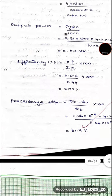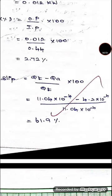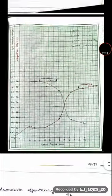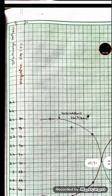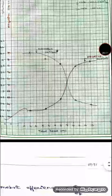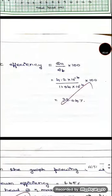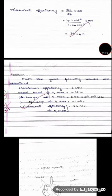The percentage slip is calculated using the formula: (Q_theoretical − Q_actual) / Q_theoretical × 100. These calculated values are tabulated and then plotted on a graph with total head on the x-axis and discharge in meter cube per second and negative slip on the y-axis. The discharge curve and the negative slip curve are each connected, and the final calculated values are written in the result.